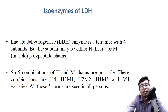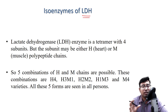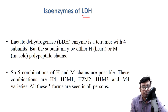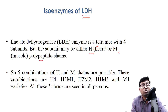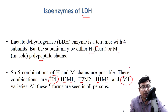Moving to a specific example: lactate dehydrogenase (LDH) is one of the most important isoenzyme examples for undergraduate students. LDH is a tetramer with four subunits of two types: H-type (derived from heart) or M-type (from muscle) polypeptide chain. Five combinations are possible: H4 (homomultimer), H3M1, H2M2, H1M3 (all heteromultimers), and M4 (homomultimer). All five forms are seen in every individual.